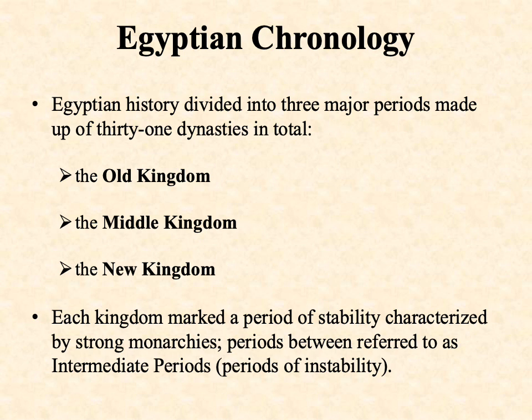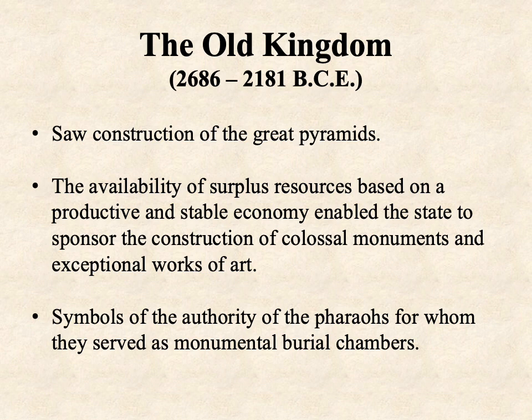What sets the kingdoms apart is that there were breakdowns in political and social order — periods of instability referred to by historians as intermediate periods. So things would go along well in the Old Kingdom, then break down into an intermediate period, then someone would reunify and stabilize the territory, beginning the Middle Kingdom. There is a lot of consistency in shared Egyptian culture, religious system, and way of life, but each kingdom has certain characteristics that distinguish it from the other two.